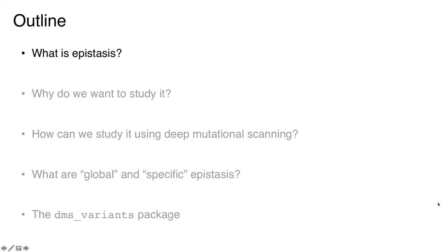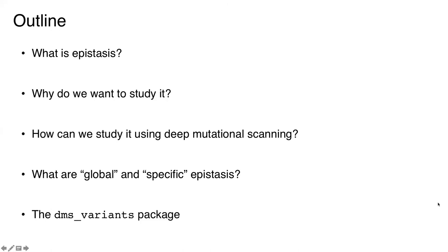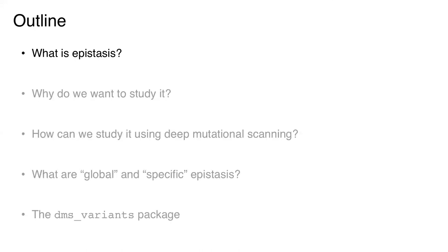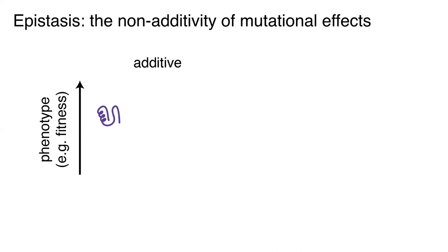The outline: a brief example illustrating what epistasis is and why it's worth studying; how we can study it using deep mutational scanning, parsing out global and specific epistasis; and finally a brief introduction to a package Jesse Bloom has developed implementing these analyses. Epistasis is defined as the non-additivity of mutational effects — when mutations combine with different effects than predicted from their individual effects alone.